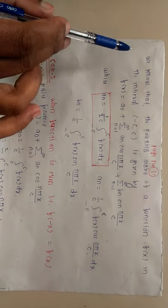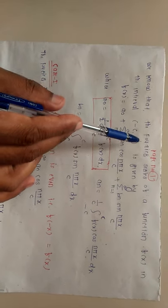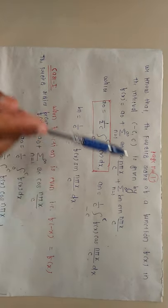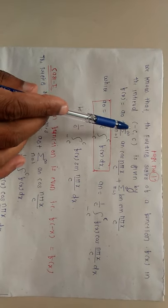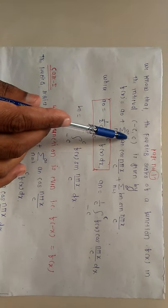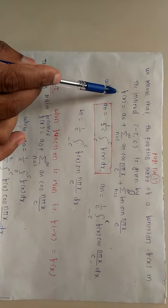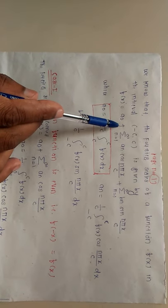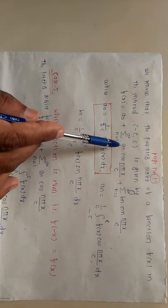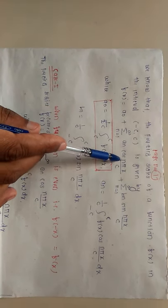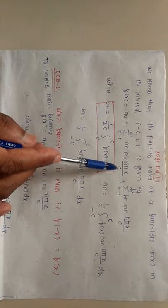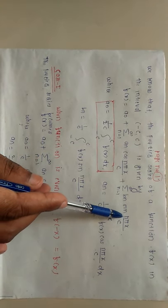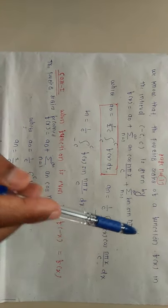Good morning. We know that the Fourier series of the function f(x) in the interval from -c to +c is given by f(x) = a₀ + Σ(n=1 to ∞) aₙ cos(nπx/c) + Σ(n=1 to ∞) bₙ sin(nπx/c).